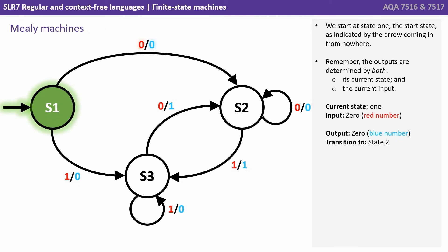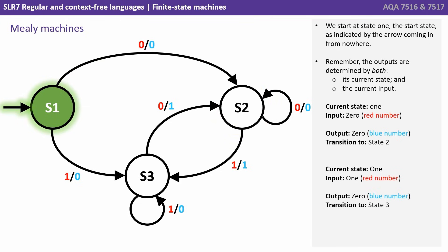So the current state is state one, and the input is zero — that's the red number — and the output is zero — that's the blue number. Then we transition to state two. If the current state is one and the input is one, the red number, then the output will be zero, the blue number, and we transition to state three.